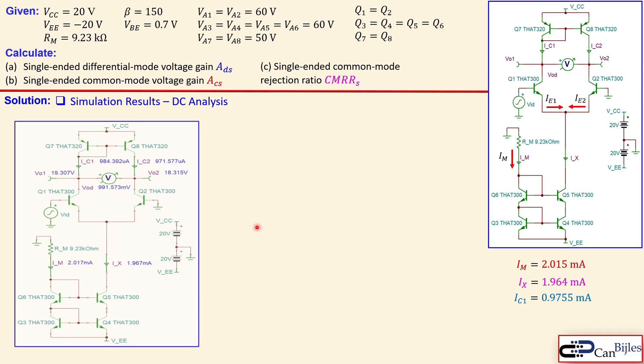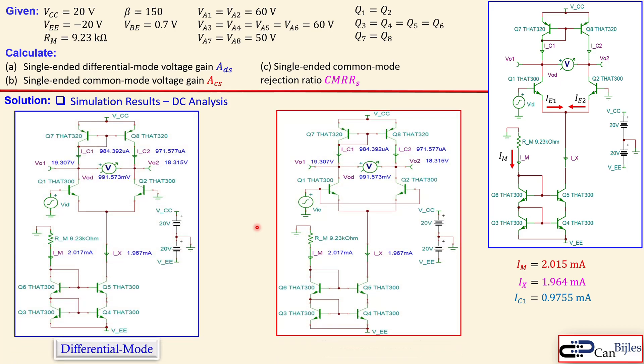We will now start with DC analysis first. This is for the differential mode on the left side. And this is for the common mode. Now we see the IM which is our reference current. Which is 2.070 mA. Which is close to what we have calculated. And the IX which is our tail current is 1.967 mA. Which is also pretty close. So it is also fine.